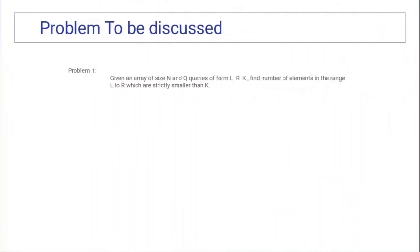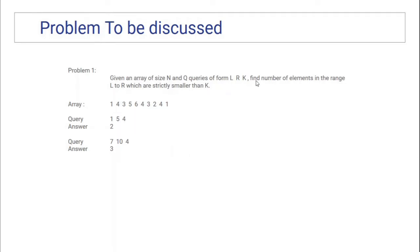In the previous lecture we saw what kind of problems cannot be solved using a segment tree. One such problem is: given an array of size n and q queries of the form L, R, and K, you have to tell how many elements are there in the range L to R such that they are strictly smaller than K.